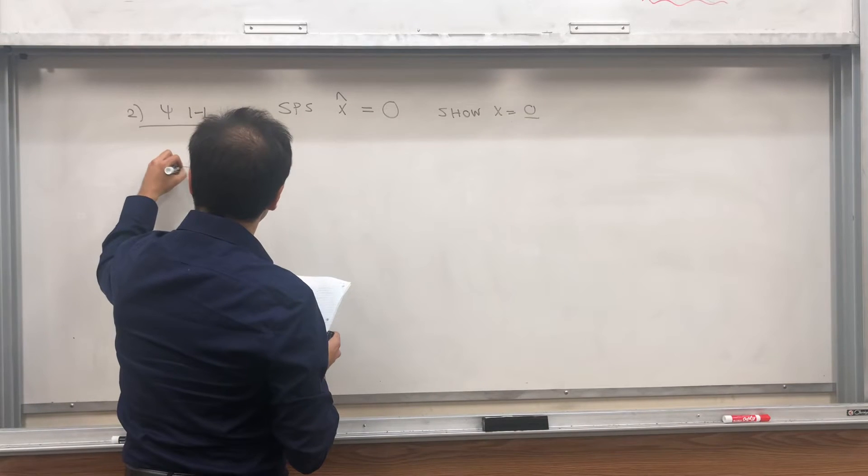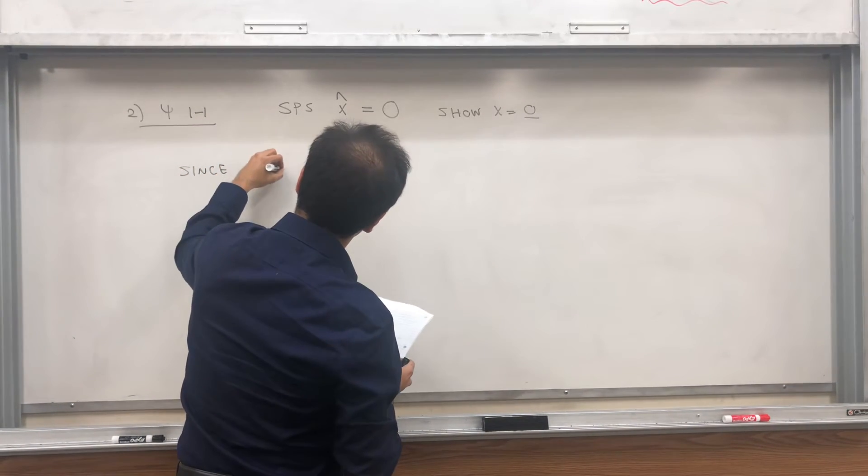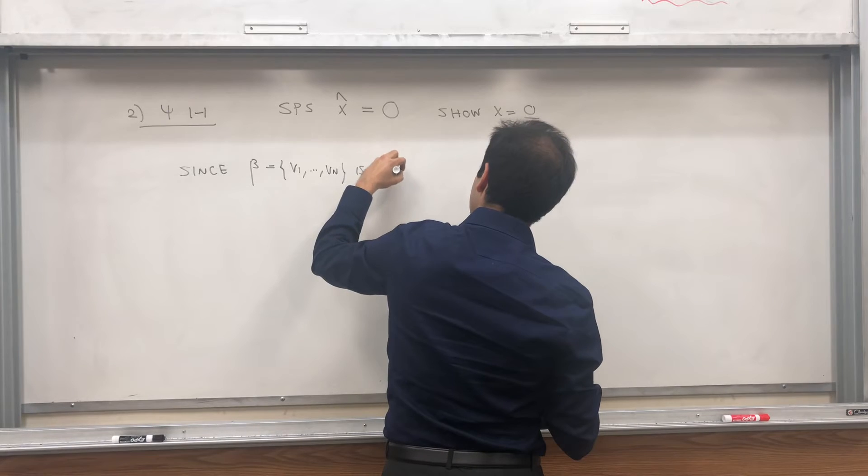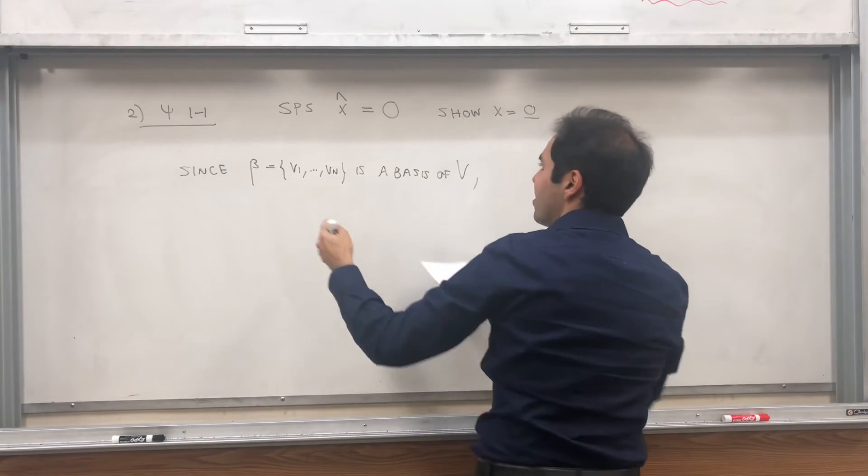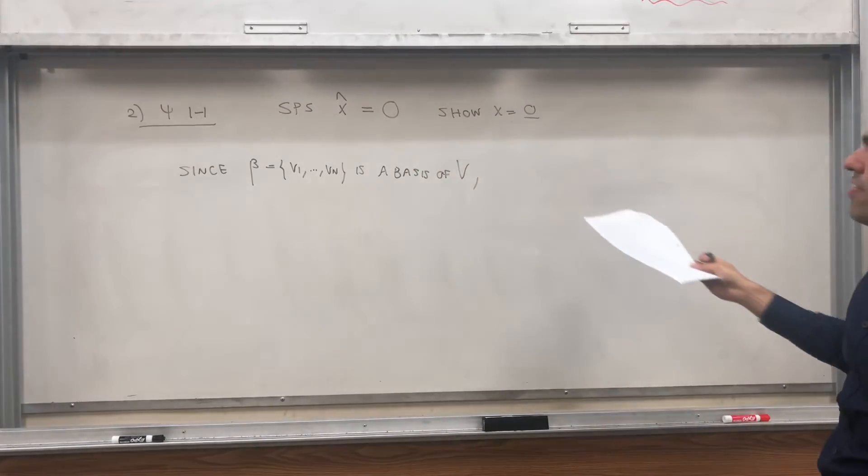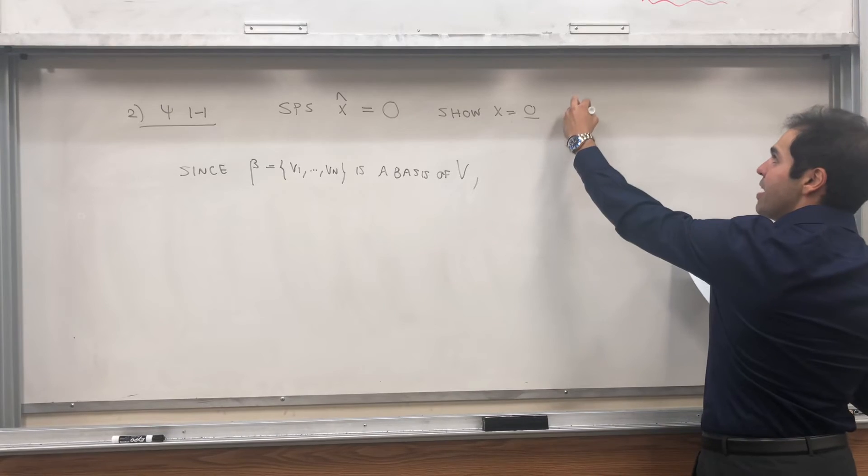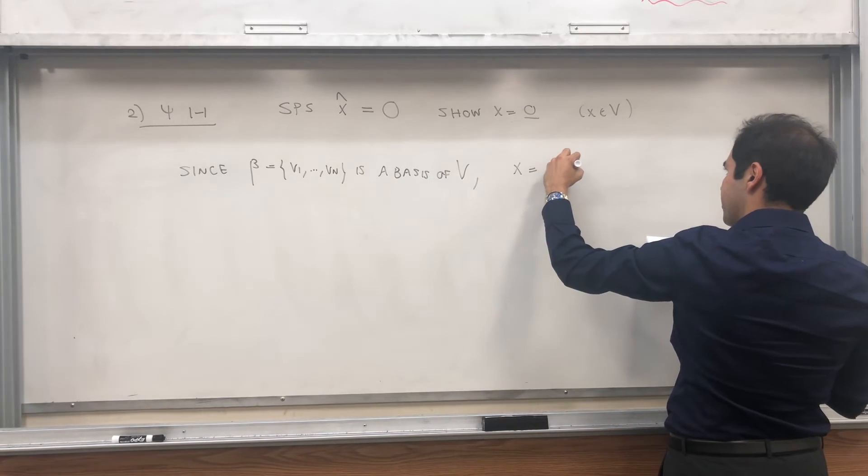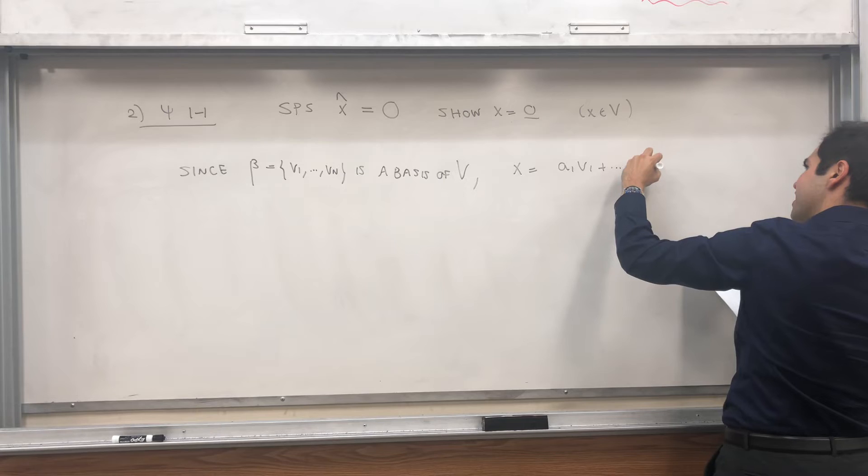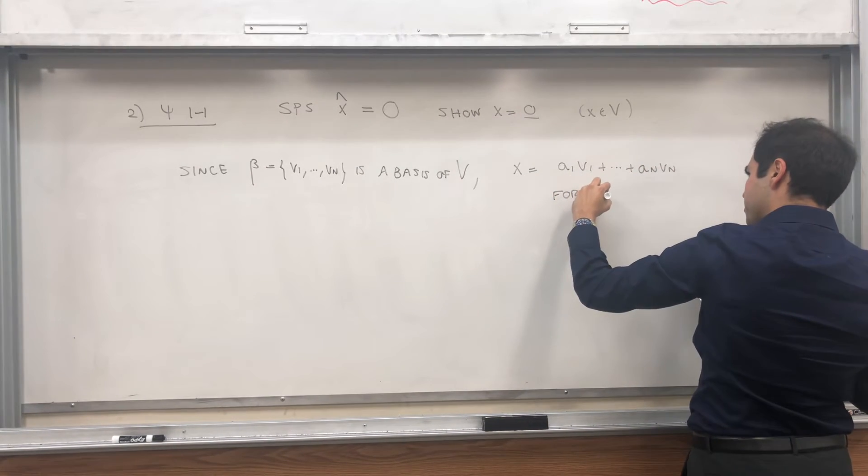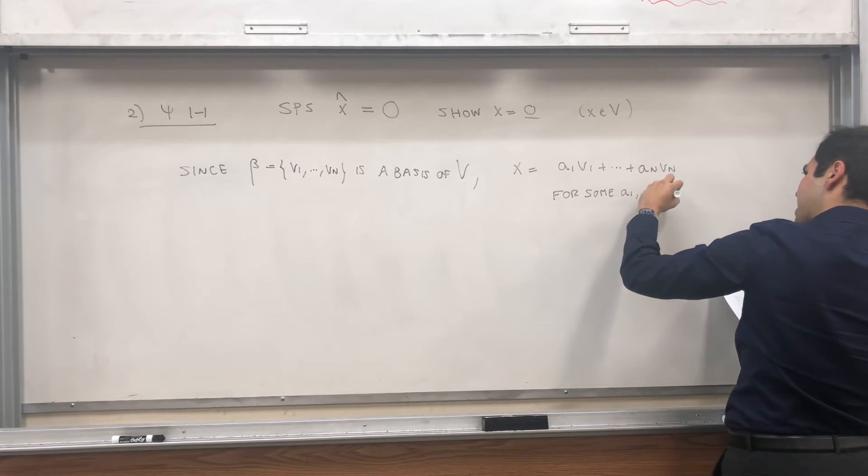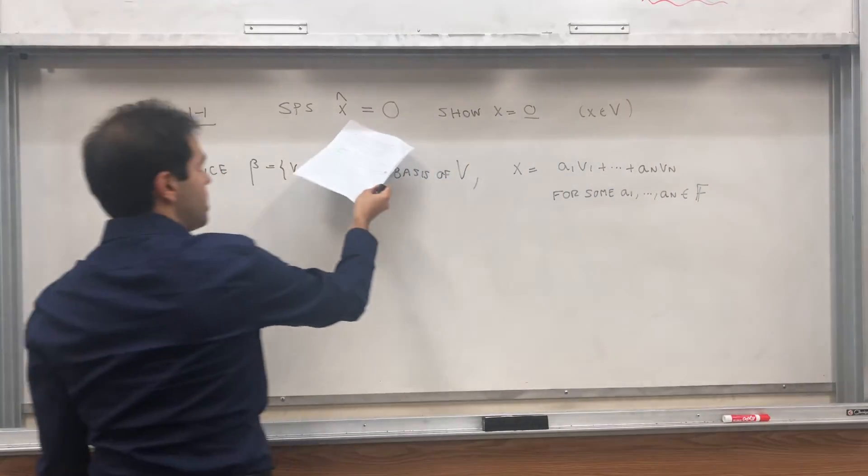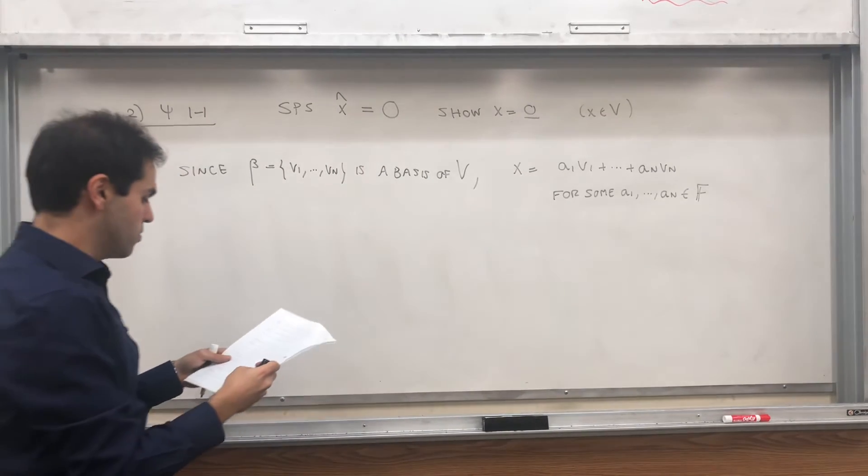So since, let's say beta, let's say v1 up to vn, is a basis of v. If you want, let beta to be a basis of v, then the point is x, remember x is a vector in v, we can write x as a linear combo of v1 up to vn. a1 v1 plus dot dot dot plus an vn for some a1 up to an in your field. And the idea is to take this identity and decompose it in terms of the v's.